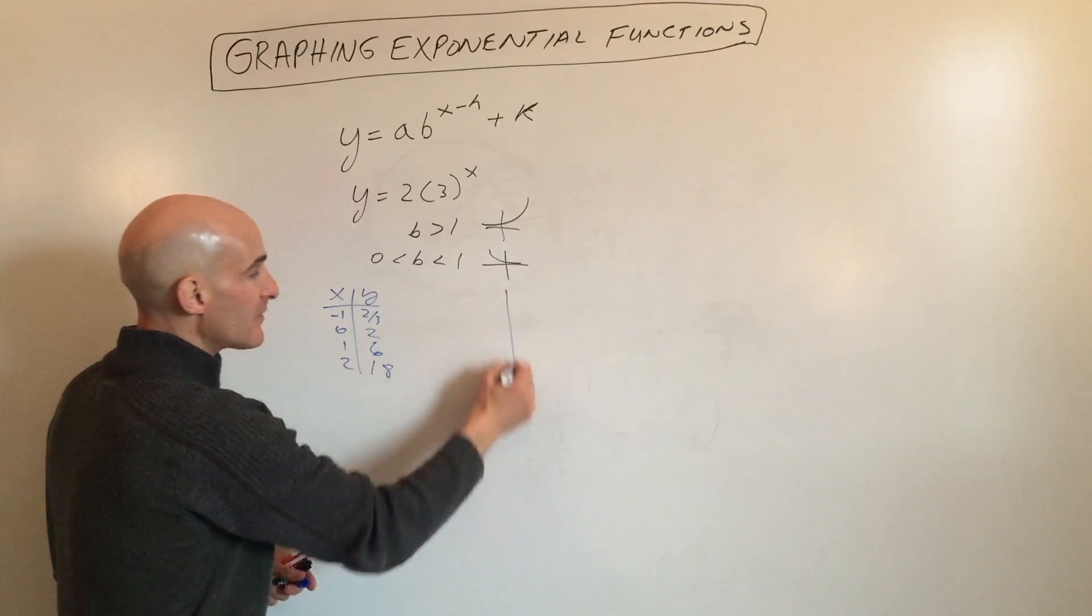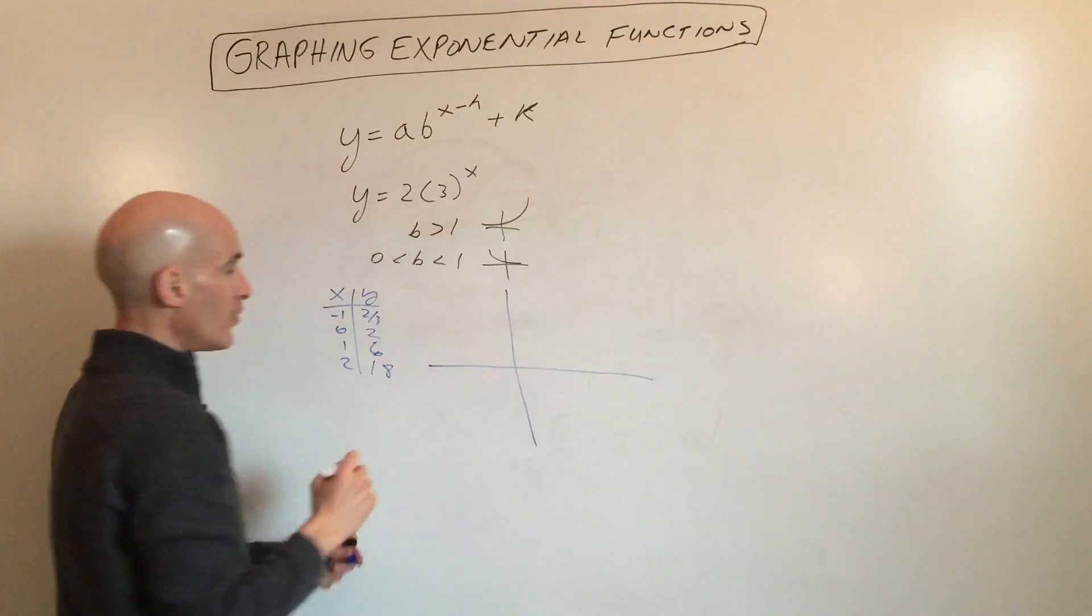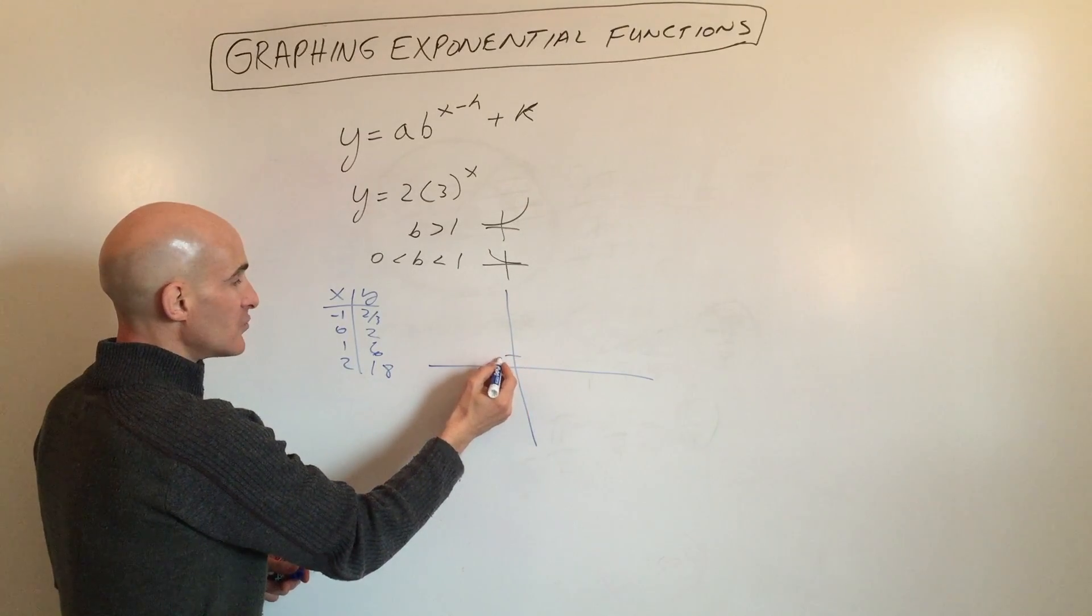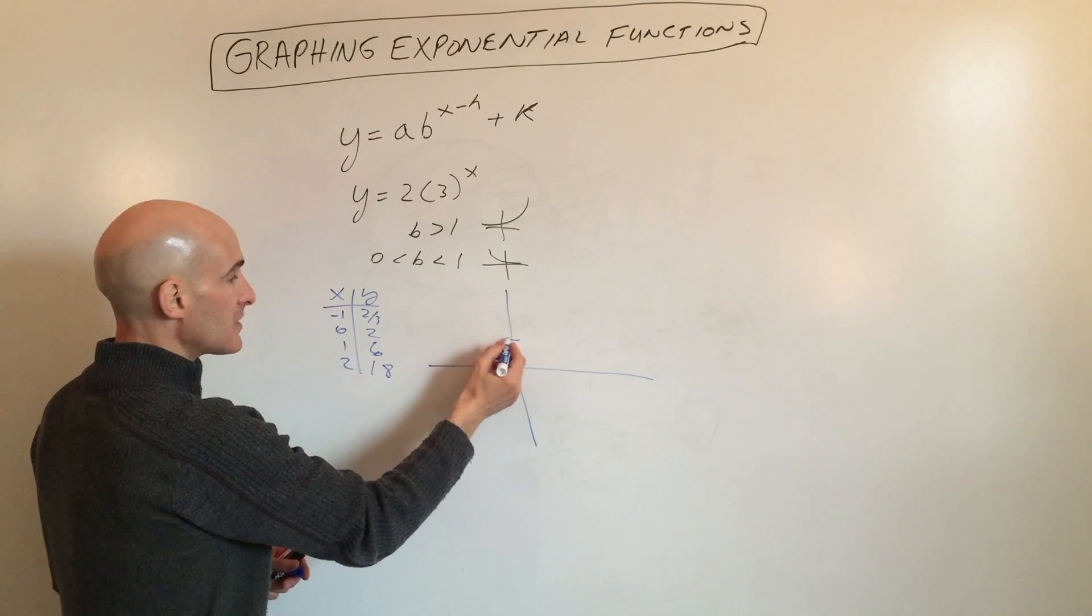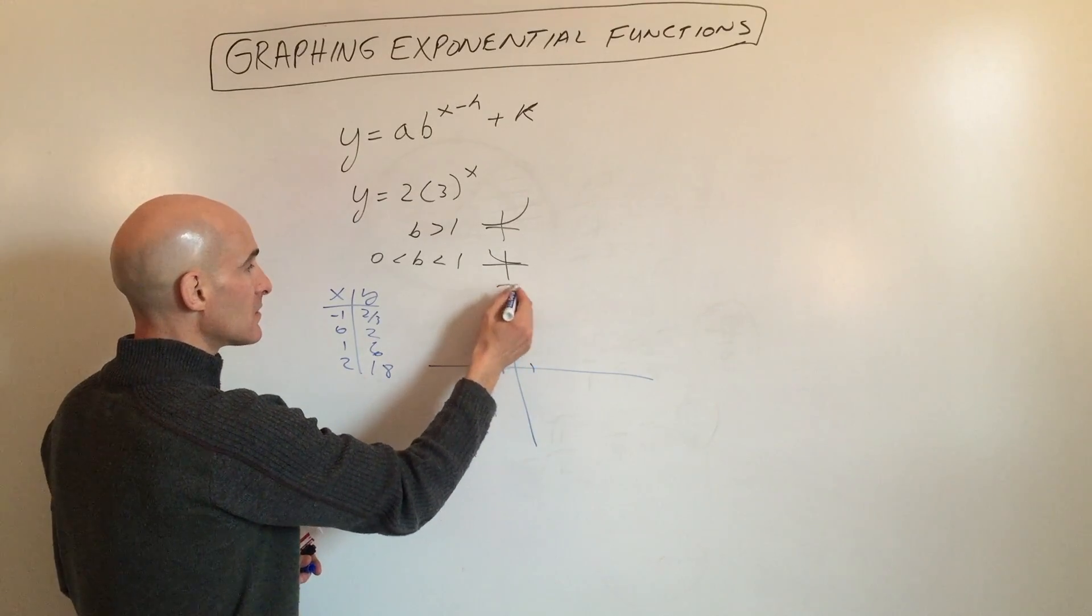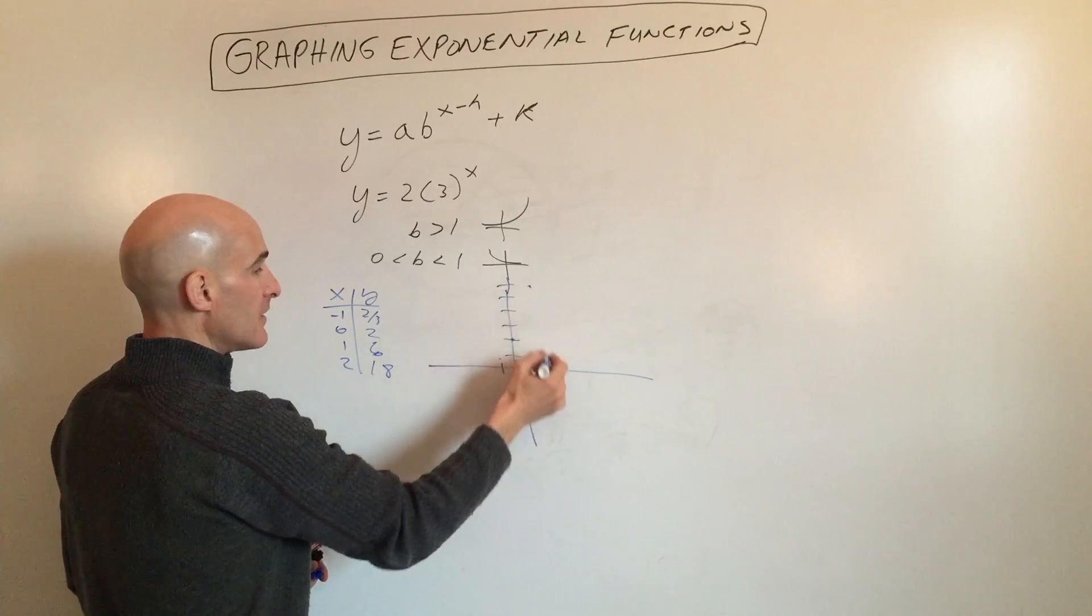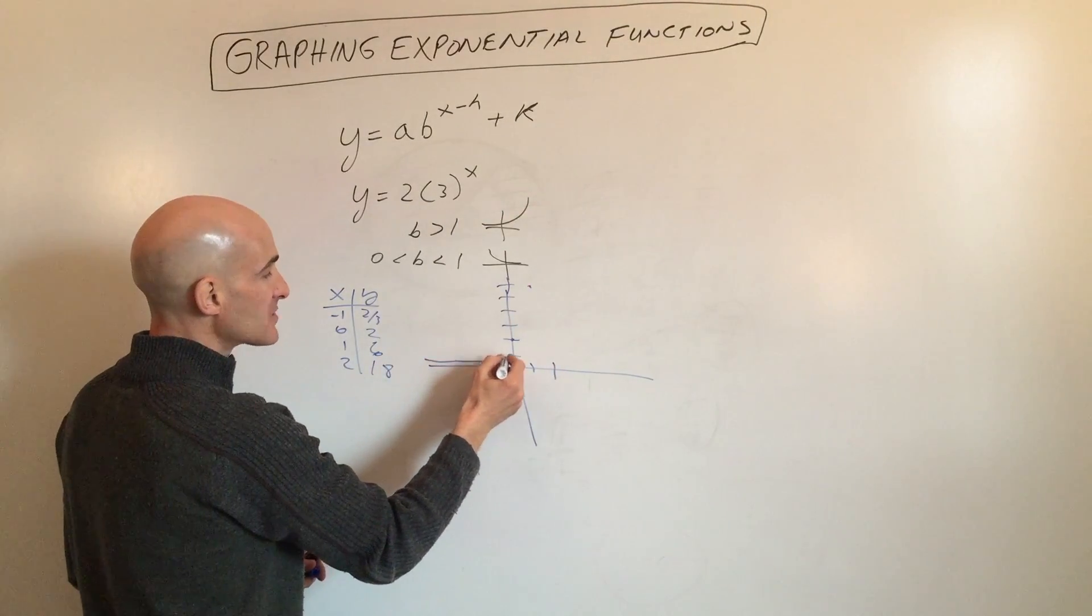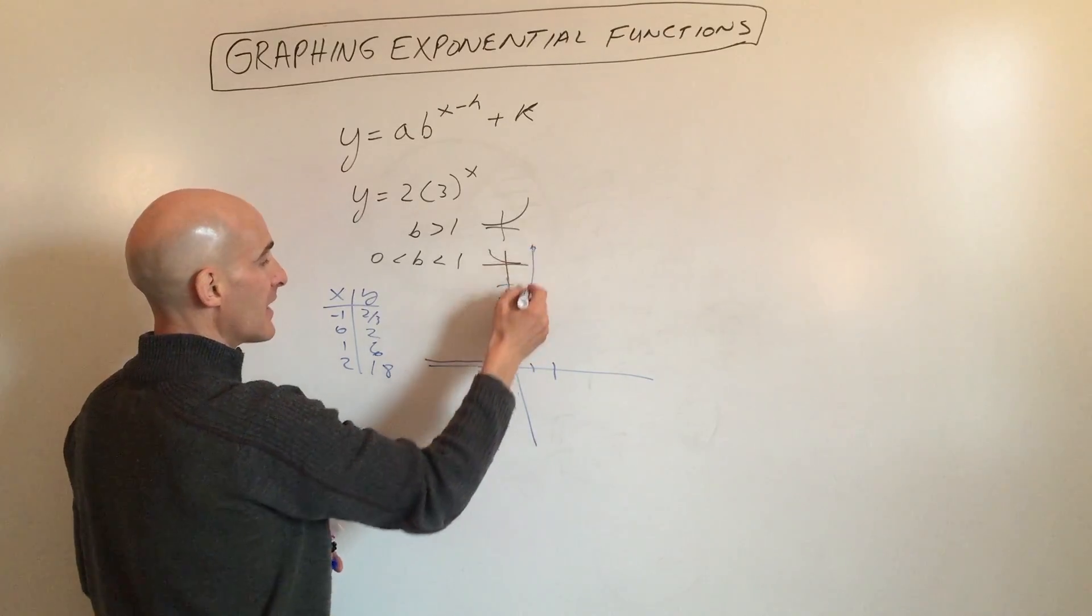If we plot these points: at negative 1, we're at 2 thirds; at 0, we're at 2; at 1, we're at 6; and at 2, we're at 18. It starts to go right off the graph, growing faster and faster.